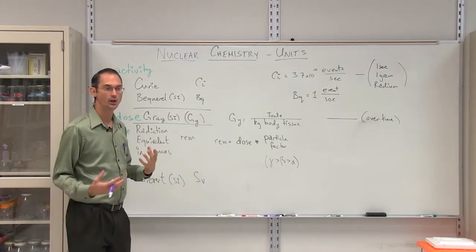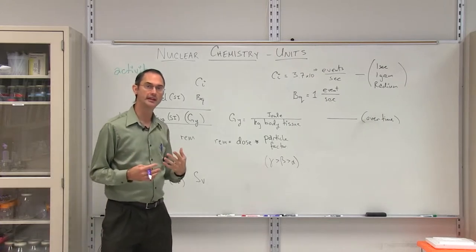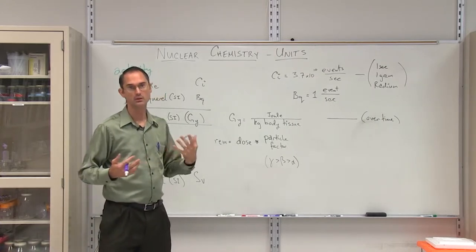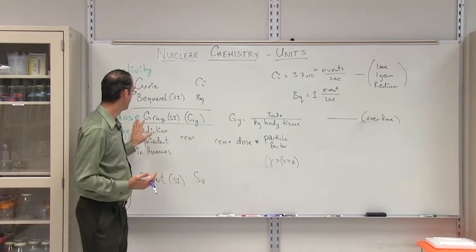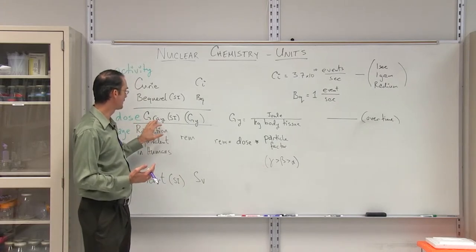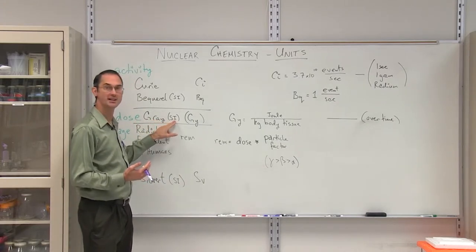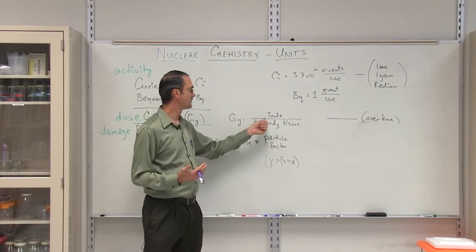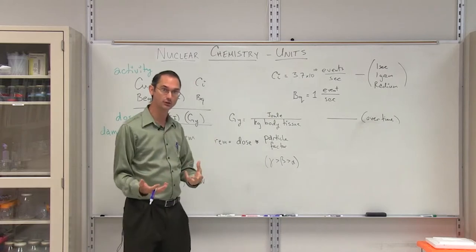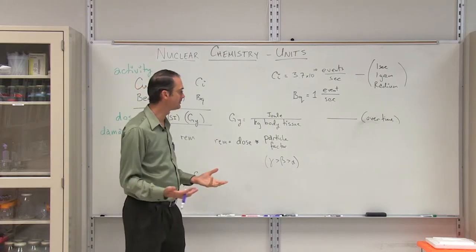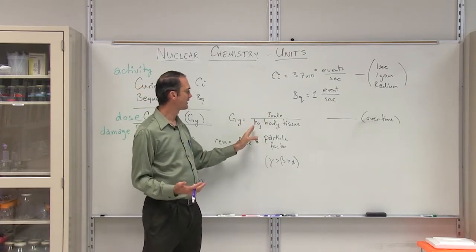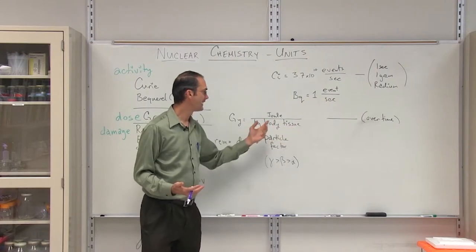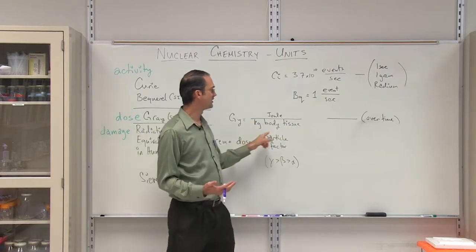The second thing is the dose, and the dose has to do with, like any other dose that you would get of a medicine or something that is not good for you. In this case, the dose is a unit called the GRAY. It is, in fact, a Systeme Internationale unit or a metric unit. GY is the abbreviation. And the GRAY is simply the number of joules or the amount of energy, it could be in calories for example. The number of joules per kilogram of body tissue that is, in fact, received.